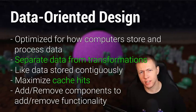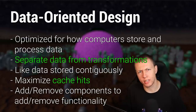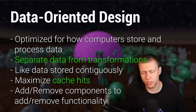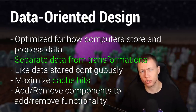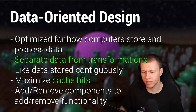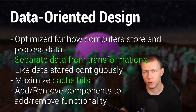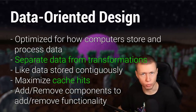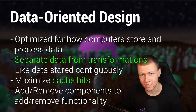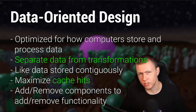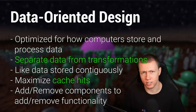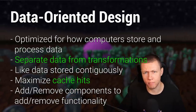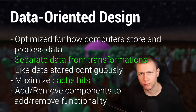Beyond cache efficiency, there are other cool things you can do with data-oriented design. Because systems operate across large groups of data, you can associate different data component types with different entities to change their behavior. Systems that say 'I want to operate across all entities with these specific data components' allow you to add or remove data components from entities to change their functionality. Unity already has a half-step toward this with its game object component model.